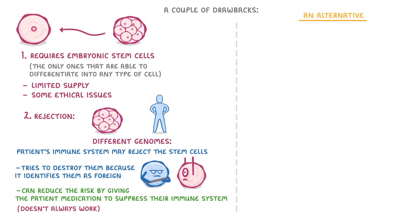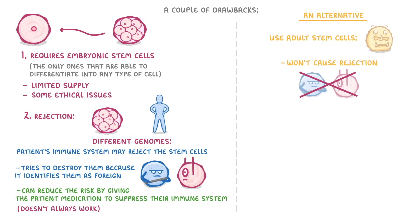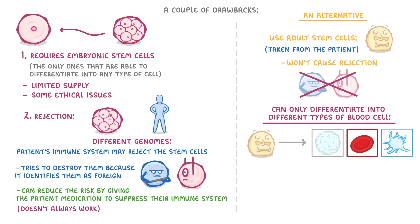An alternative which would overcome both of these issues would be to use adult stem cells instead. These are easy to get hold of and won't cause rejection because they can be taken from the patient themselves. The downside is that adult stem cells can only differentiate into different types of blood cells, so while we could use them to treat blood cell disorders like sickle cell anemia, we couldn't use them to treat conditions like diabetes or paralysis.